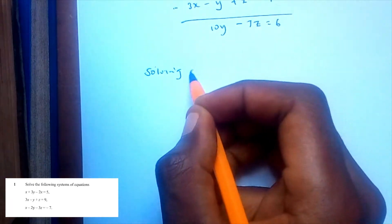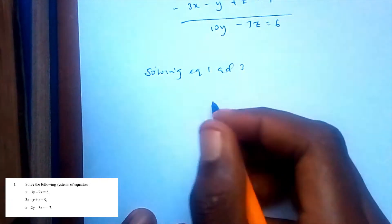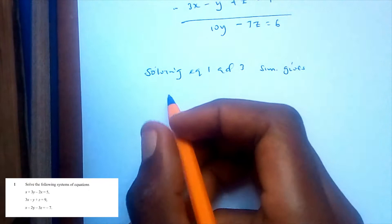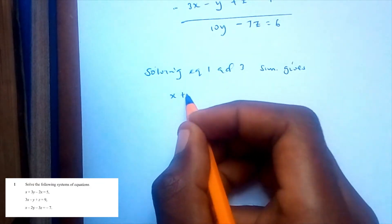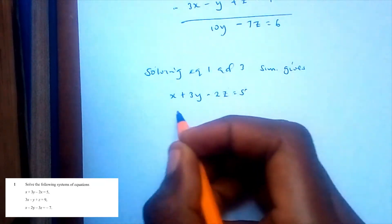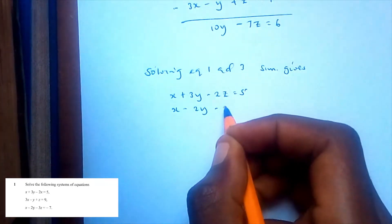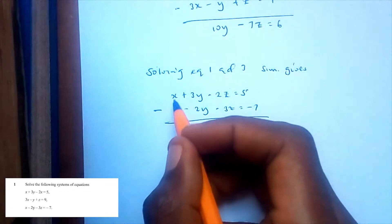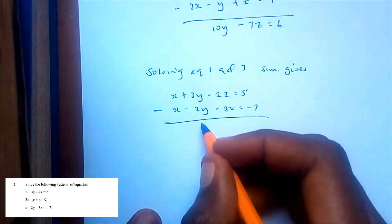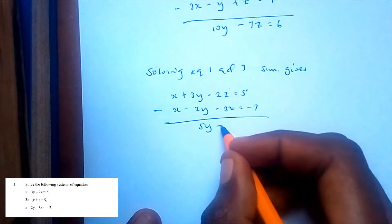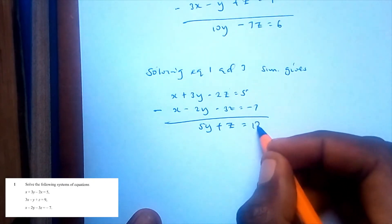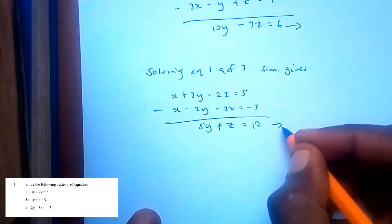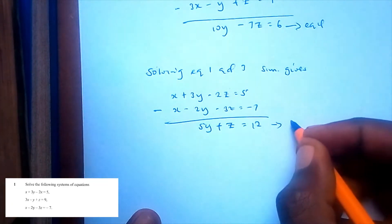Now solving equations 1 and 3 simultaneously: equation 1 is x + 3y - 2z = 5, and equation 3 is x - 2y - 3z = -7. Since x is already balanced, subtracting gives 5y + z = 12. We'll call this equation 5.